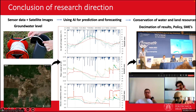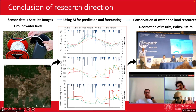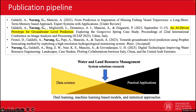Our basic pipeline involves three major steps. First, combining sensor data — this includes on-ground measurements of environmental factors like groundwater levels and quality, as well as satellite images. Second, artificial intelligence is employed to analyze these combined data for prediction and forecasting. Third, these predictions help make decisions related to conservation of water and land resources. The results are disseminated widely, influencing policy, helping the city plan ahead, and assisting small and medium enterprises — for example, companies involved in packaging drinking water — to make sustainable choices in the future.